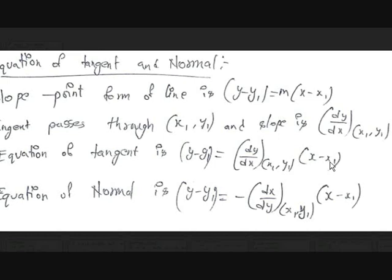The normal also passes through the point (x1, y1), and since the tangent and normal are perpendicular, the equation of the normal is: y - y1 = (-dx/dy at x1, y1) × (x - x1). So to summarize: the equation of the tangent is y - y1 = (dy/dx) × (x - x1), and the equation of the normal is y - y1 = (-dx/dy) × (x - x1).